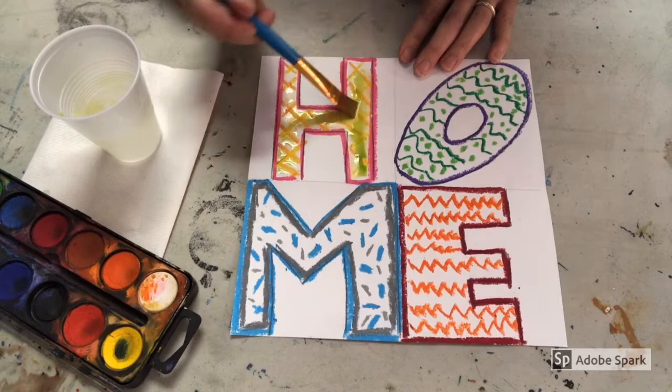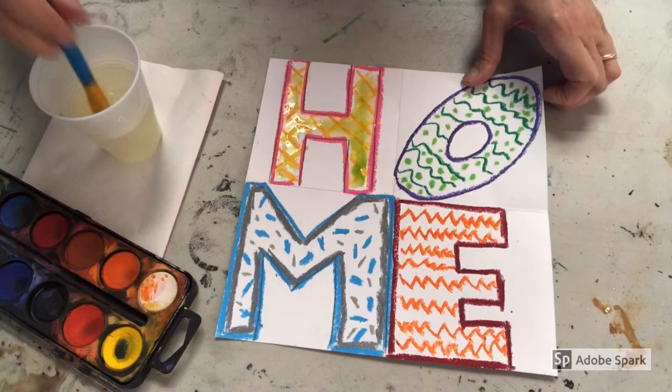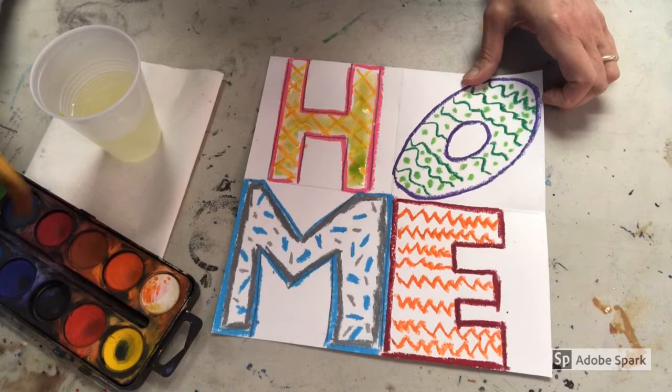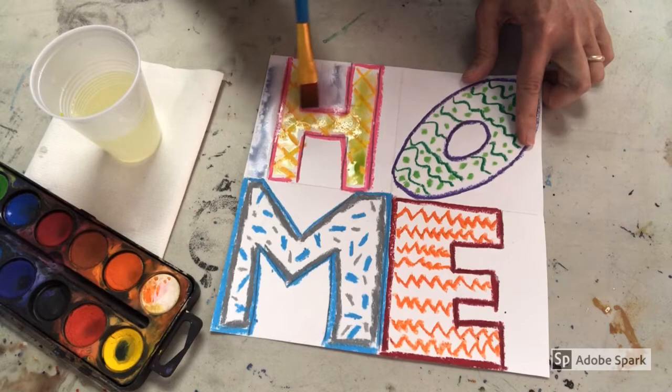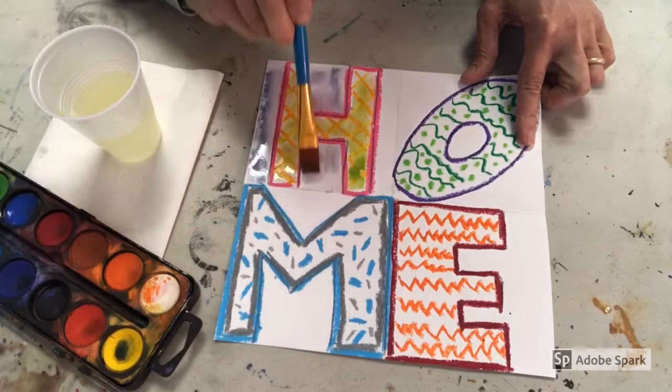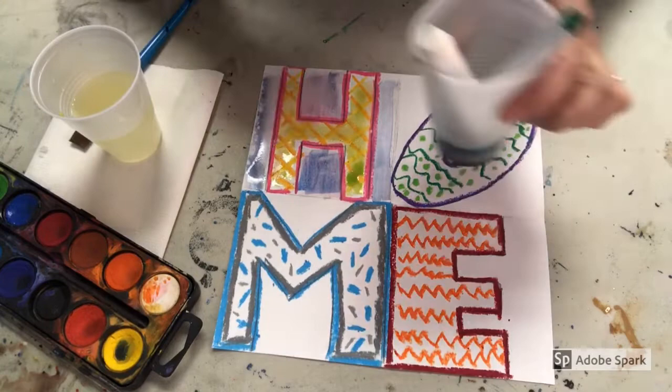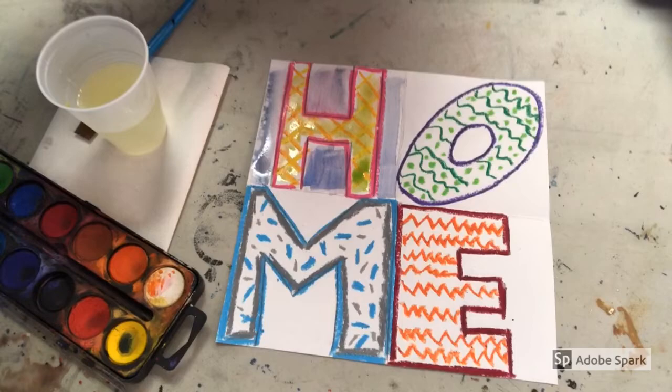Think about color families as you're painting over it. Do you want to use warm colors, cool colors? I'm using this purplish blue behind my H because purple and yellow are complementary colors, they're opposite each other on the color wheel, which means that they will really pop. If you don't have watercolor paint you can use some of that homemade watercolor. Make sure you watch that DIY watercolor video, that works really great too.